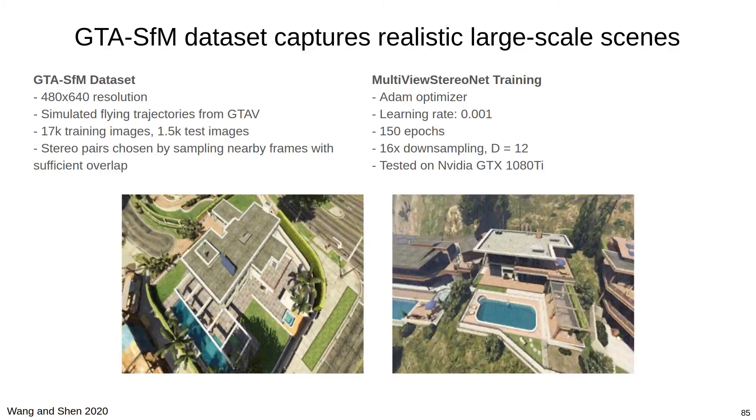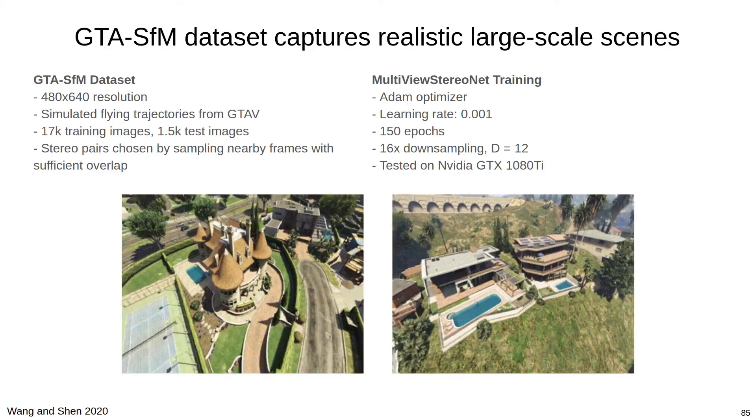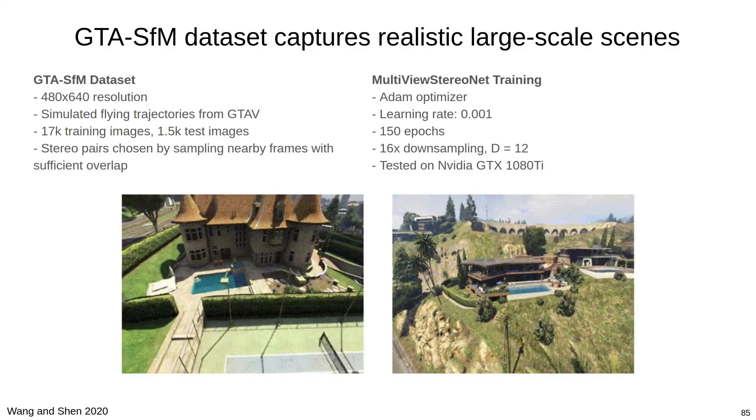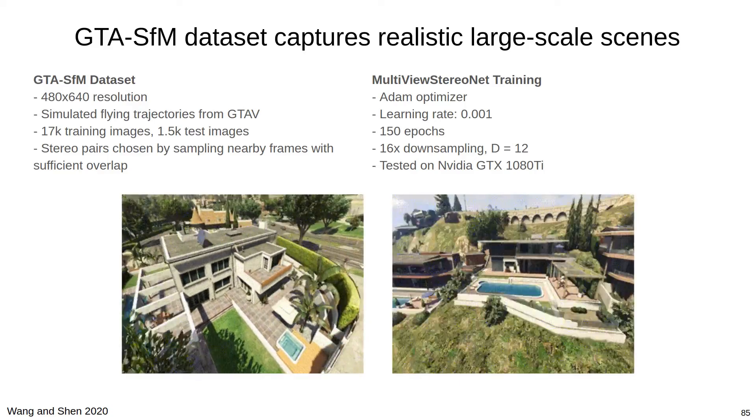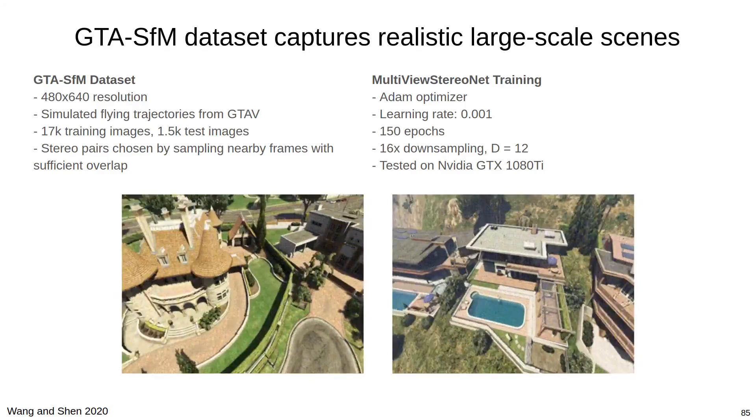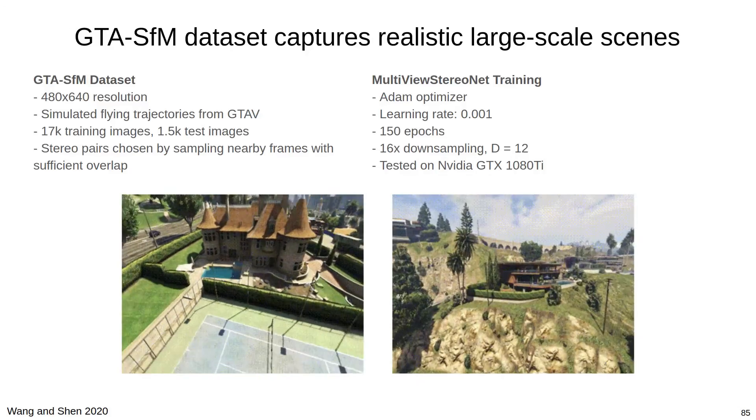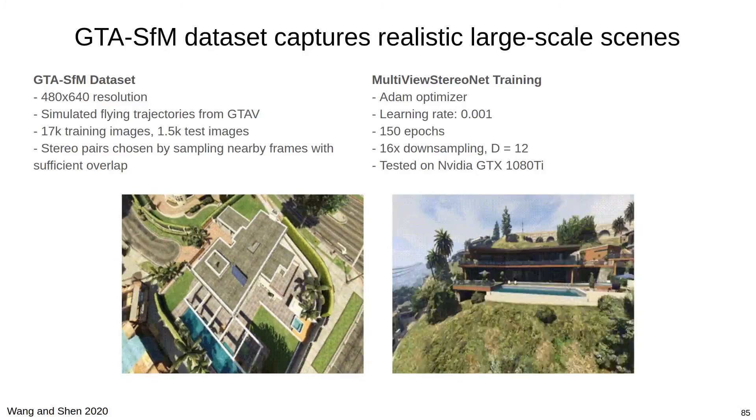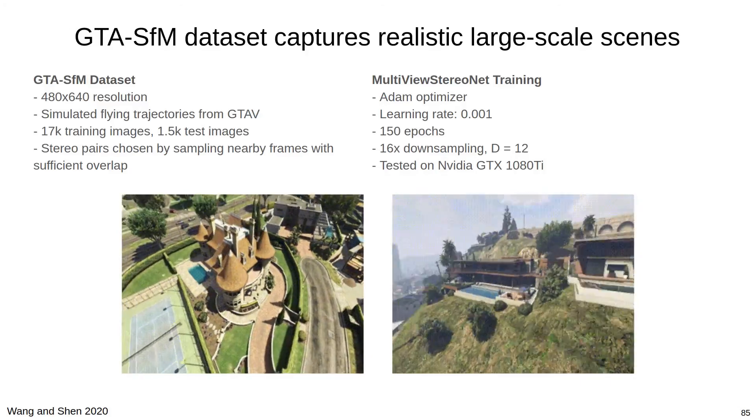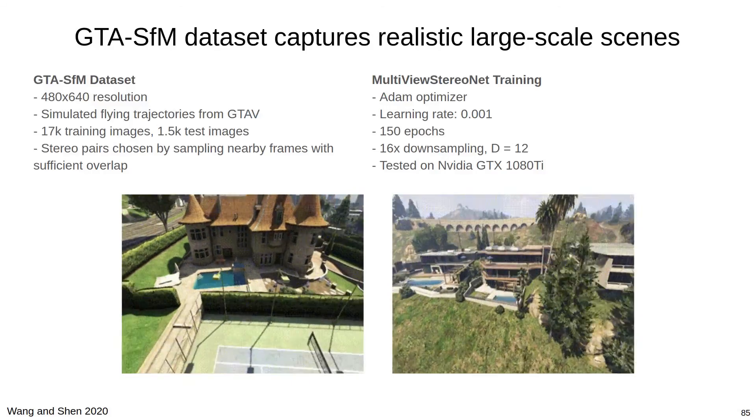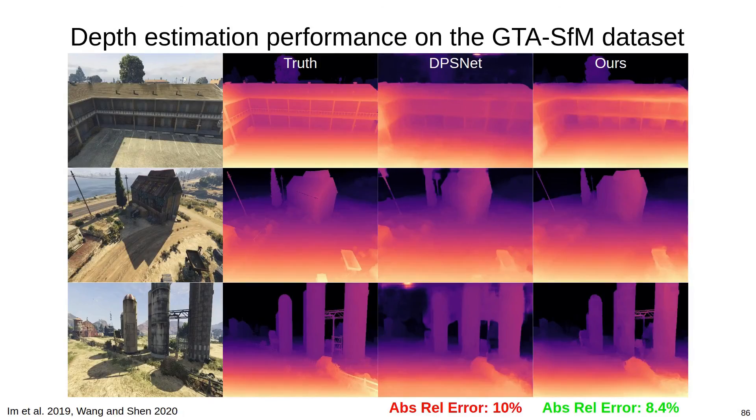We also show impressive performance on the GTA SFM dataset when compared to DPSNet. The GTA SFM dataset is a simulated benchmark from the GTA V video game with a wide variety of realistic large-scale environments and camera trajectories. There are roughly 17,000 training images and 1,500 test images. Here we show some examples of depth maps from the dataset, where we perform well compared to DPSNet.